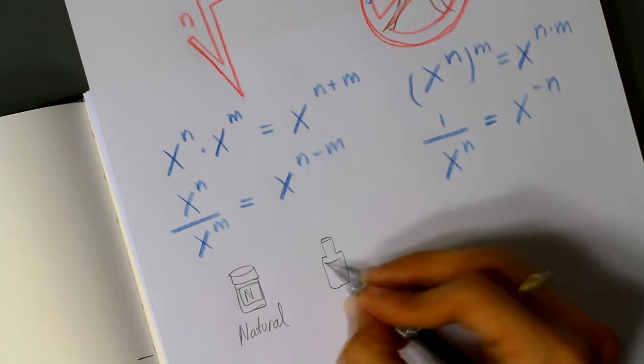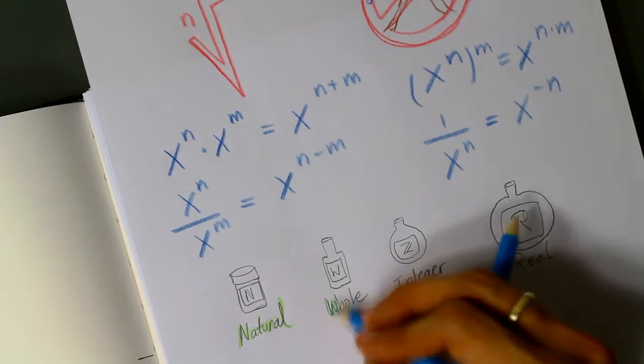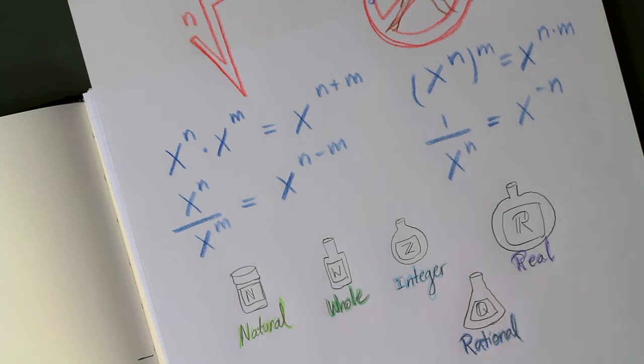Exponents, they come in many flavors, like natural, whole, integers, and even real. However, there is one kind of exponent that I did not mention, the rational ones. And I really mean rational, like one-half or one-third, for instance.